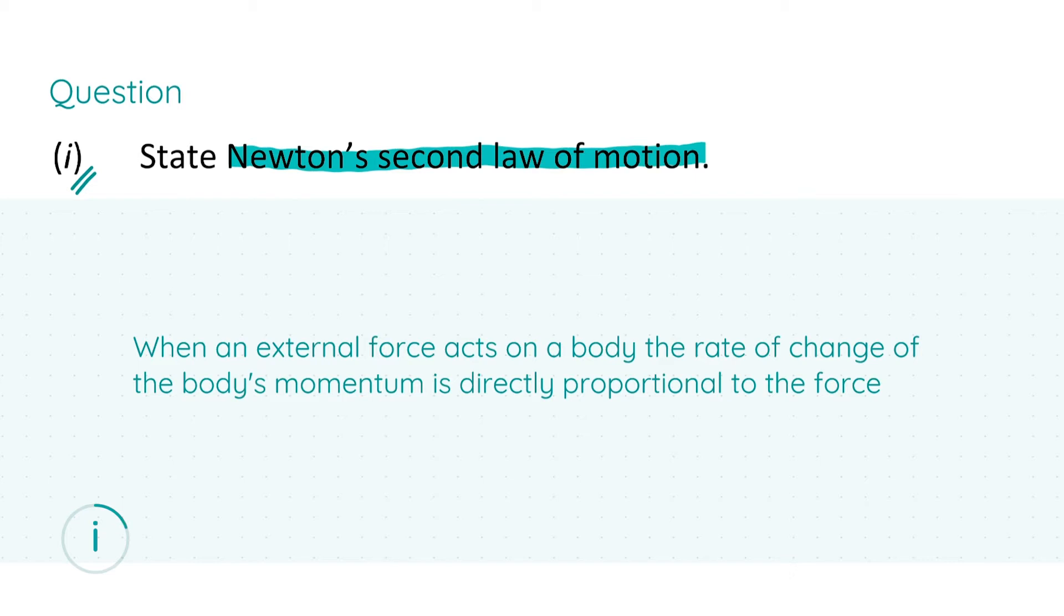In verbal notation, the definition is as follows: when an external force acts on a body, the rate of change of the body's momentum is directly proportional to the force. That's the definition in full. To be awarded your first three marks, you have to explicitly state that the force is directly proportional to something, and the second three marks come from stating what it is proportional to—the rate of change of the body's momentum—giving you your full six marks.